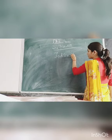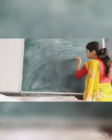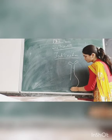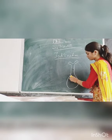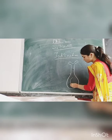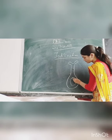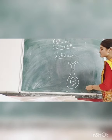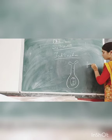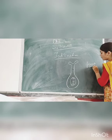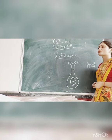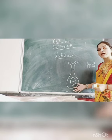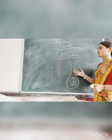Now today what we are going to study is fertilization. Fertilization means when a male gamete fuses with the female gamete — that process is known as fertilization. So this is the female part of the flower.